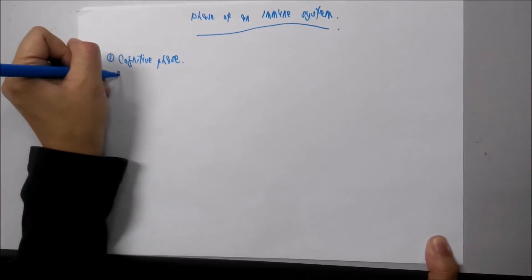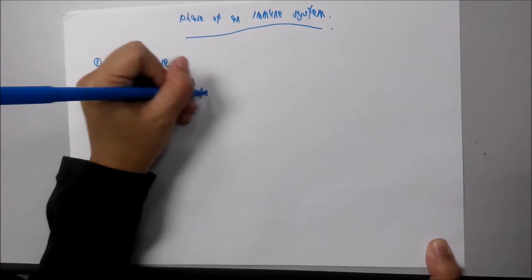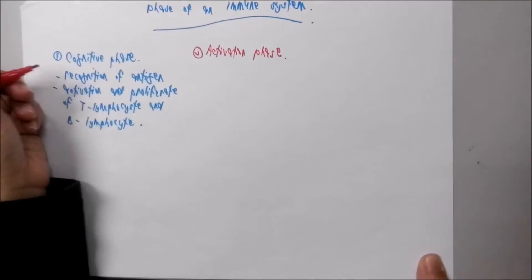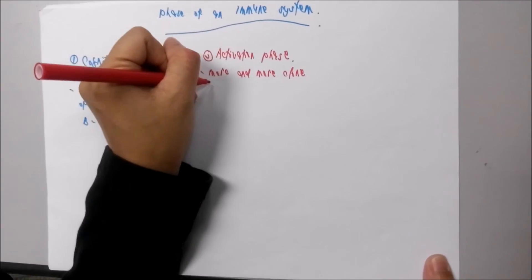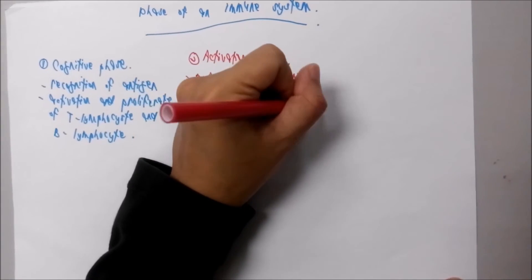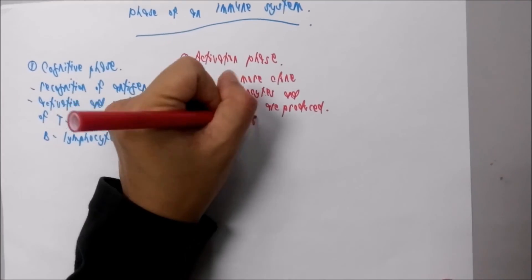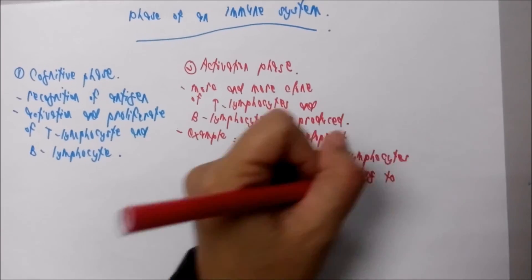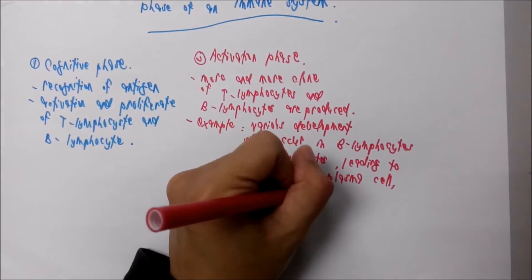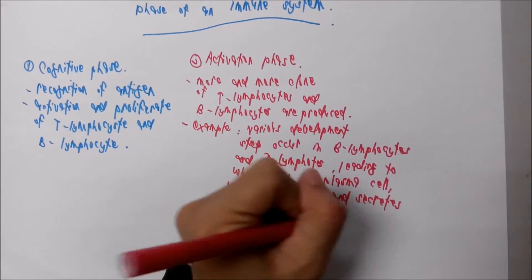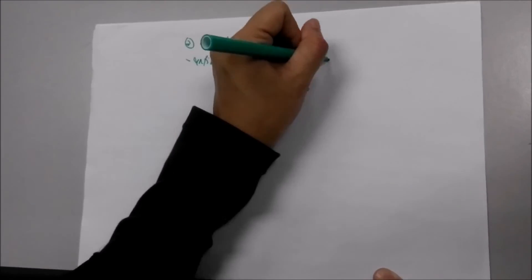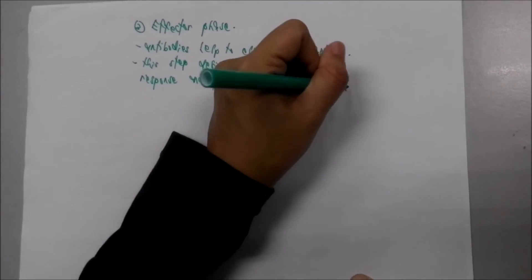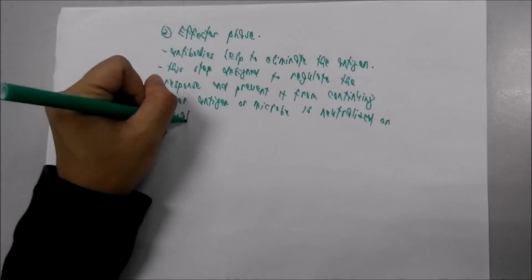There are three phases of the immune response. The first is the cognitive phase, where the antigen is recognized and T lymphocytes and B lymphocytes are activated and proliferate. The second is the activation phase, where more of the same T and B cells are produced and cells undergo differentiation — for example, T cells develop into plasma cells which synthesize and secrete large amounts of antibody molecules. The third is the effector phase, where antibodies help to eliminate the antigen, and the response is regulated to prevent it from continuing after the antigen or microbe is neutralized. The effector phase is important in relation to autoimmune disease.